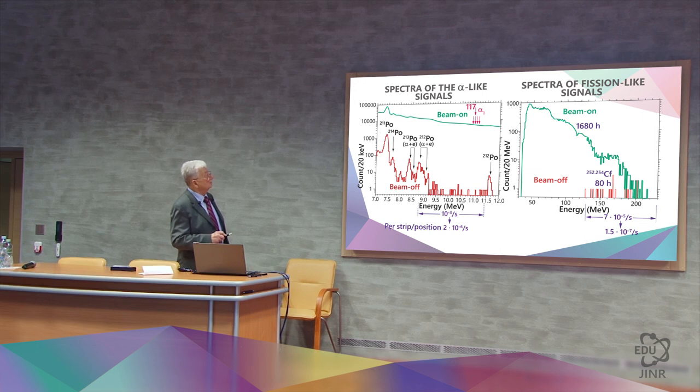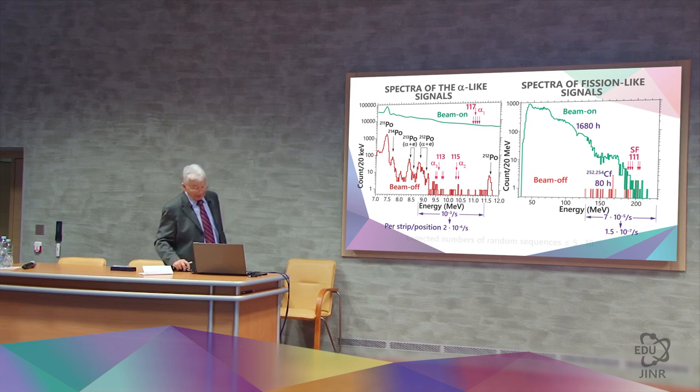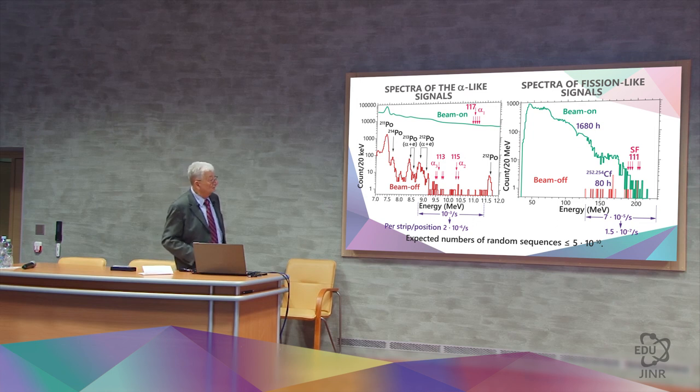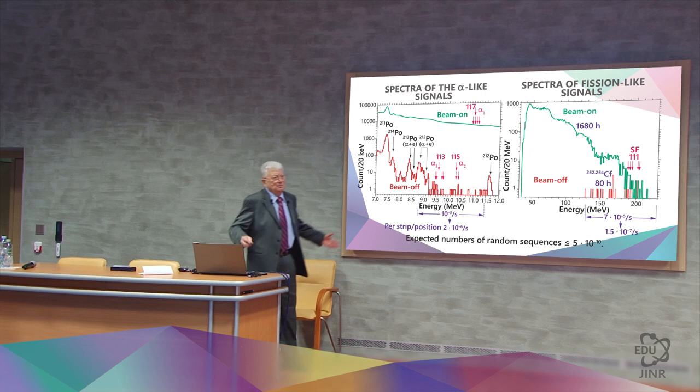Here is the 117th element, here is the 115th element, and the 113th here. Spontaneous fission takes place here. So, the probability of random sequences is 5 times 10 to the power of minus 10. The chances are minuscule.